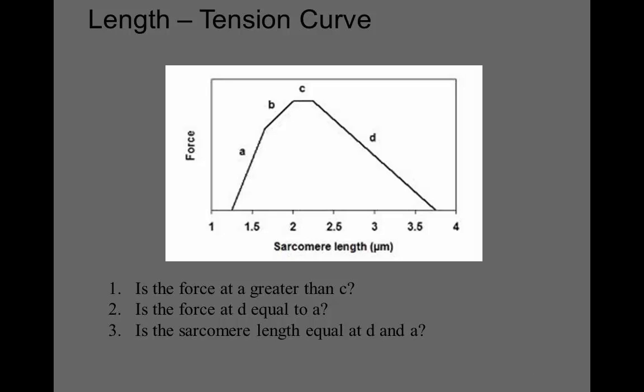This image illustrates the force-length relationship at the sarcomere level. Along the x-axis we have sarcomere length in micrometers, and along the y-axis we have force. As we see it, at shorter sarcomere length the force is lower, it increases up to c, which is a mid-range 2 to 2.5 sarcomere length, and then at longer length the force decreases.